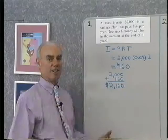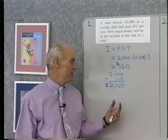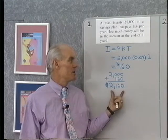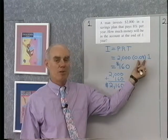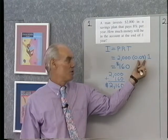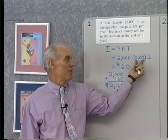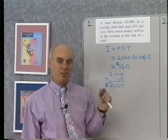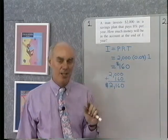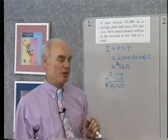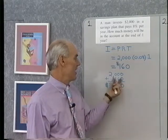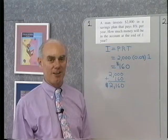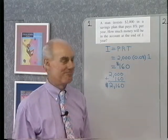The amount of money in the account at the end of one year will be $2,160, because the account earns 8% simple interest in one year. Principal times rate times time gives the amount of interest earned, and adding that to the principal gives the total amount of money in the account at the end of one year.